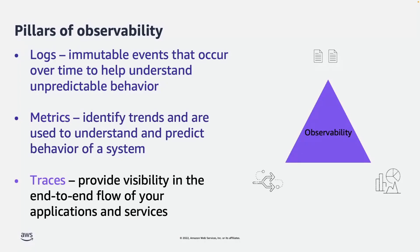The third pillar is traces. Traces is all about getting the view of end-to-end flow of your applications and services. For example, there could be multiple microservices. When users send a request to multiple microservices, you want to trace from the web request to the end of the microservices — where you are fetching the data from the database and back to the application layer and back to the web layer and back to the customer browser — where you wanted to see how this whole flow works.